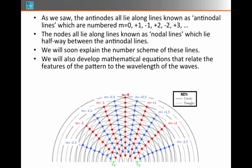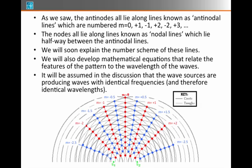We'll develop a mathematical equation that relates the features of these patterns to the wavelengths of the wave — in other words, how you can predict where these nodal lines or antinodal lines are going to occur. It will be assumed that the wave sources produce waves with identical frequencies, meaning the two point sources are going up and down at exactly the same rate, and therefore they'll also have the same wavelength.